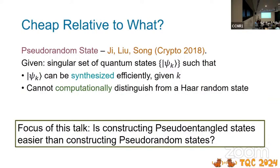The focus of this talk is: is constructing pseudo-entanglement easier than constructing pseudo-random states? Pseudo-random states are useful for a wide variety of things. Can you somehow show that pseudo-entanglement might be easier than the other? We currently don't have good relationships between the two classes.